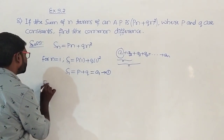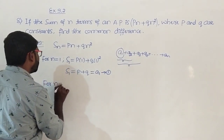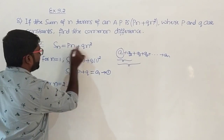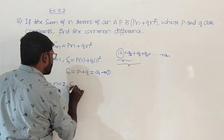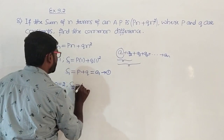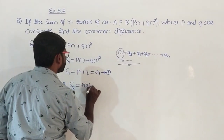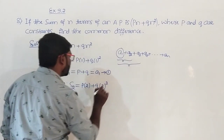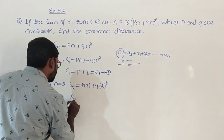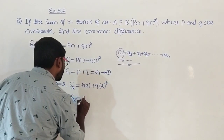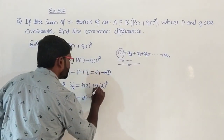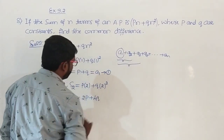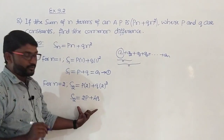Now for n equal to 2, we get S2 which equals p into 2 plus q into 2 square. So S2 equals 2p plus 4q.